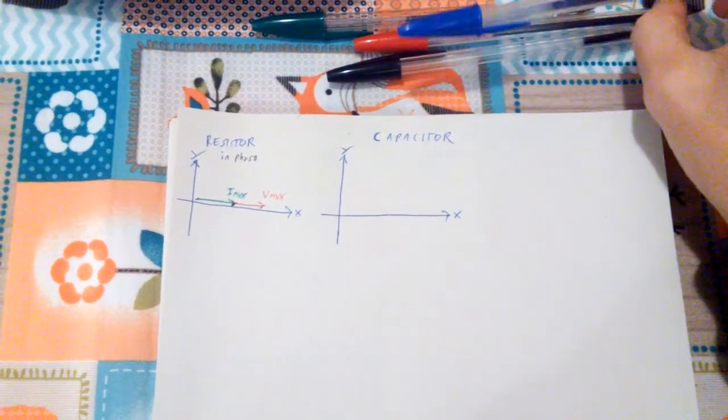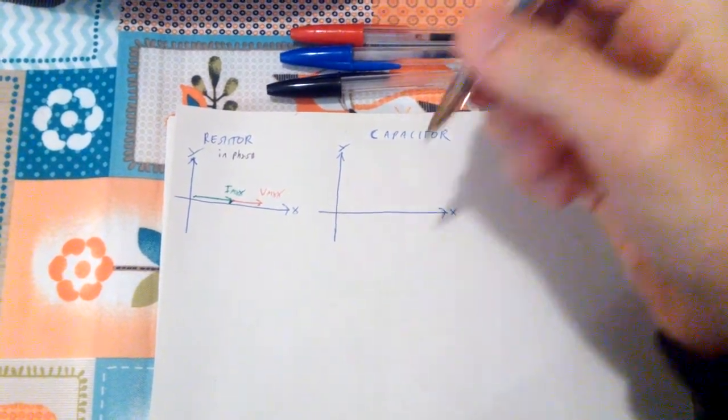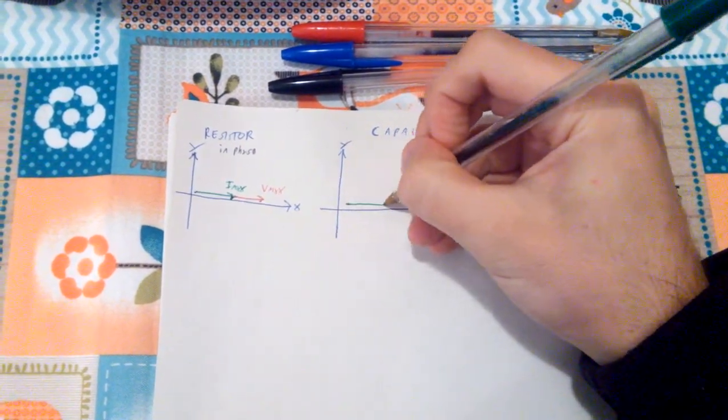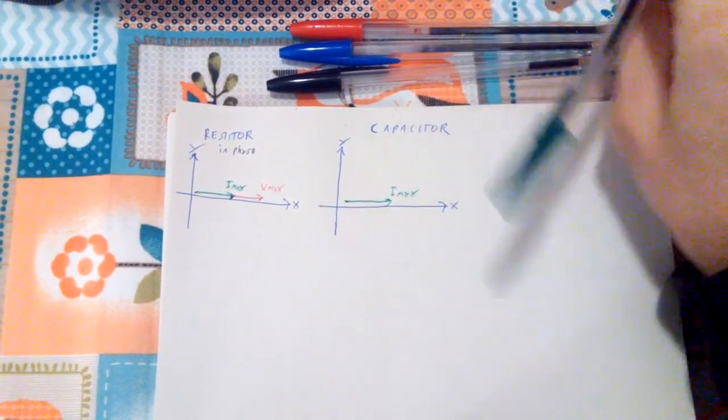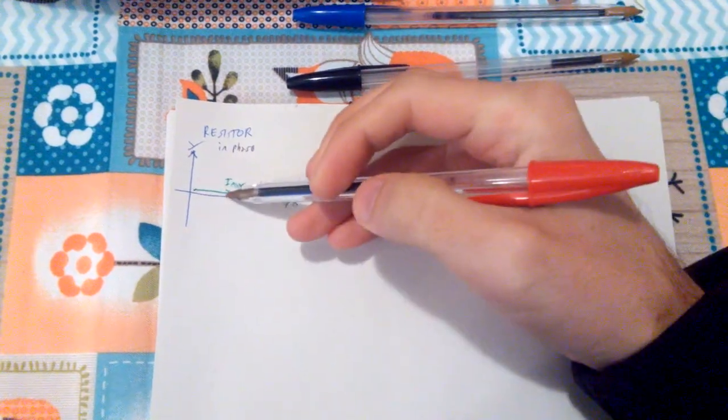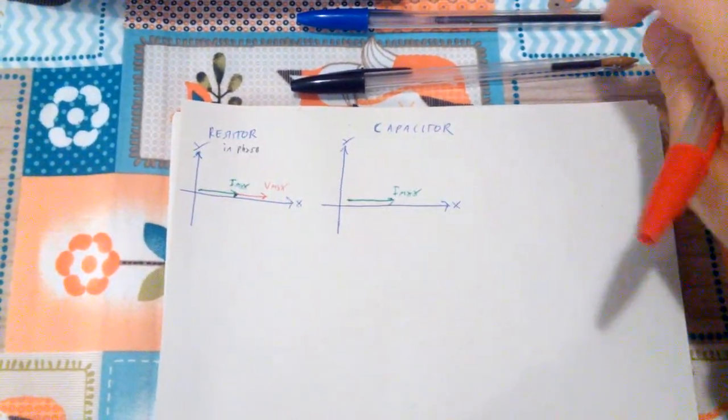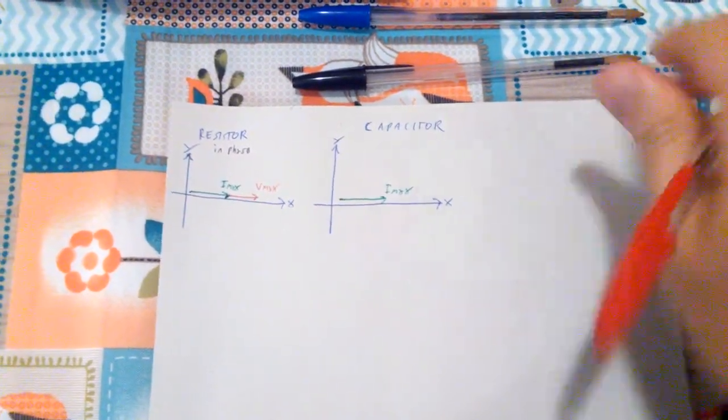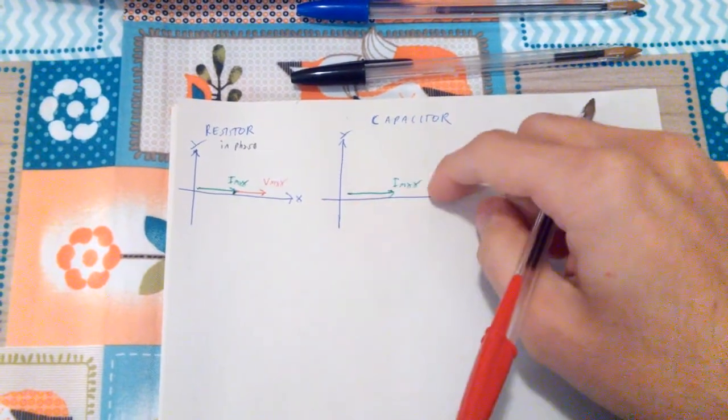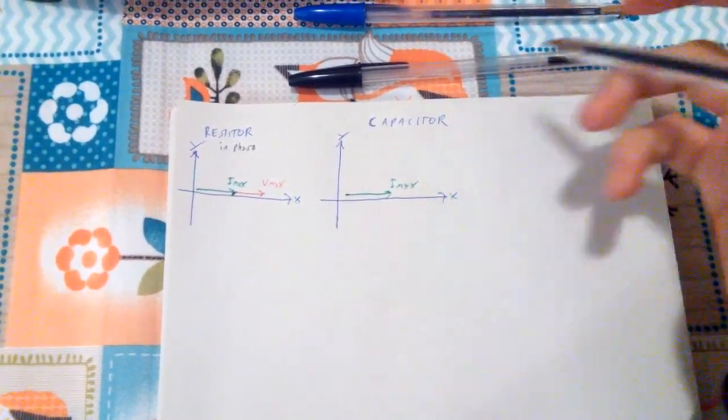Now, in a capacitor, we're actually going to have a 90 degree shift. So my Imax would be like this, just like in the resistor, just pointing in the same direction, but they can rotate for many different reasons, but just keeping them straight here with Imax straight here, and then rotate the other one in terms of Imax.